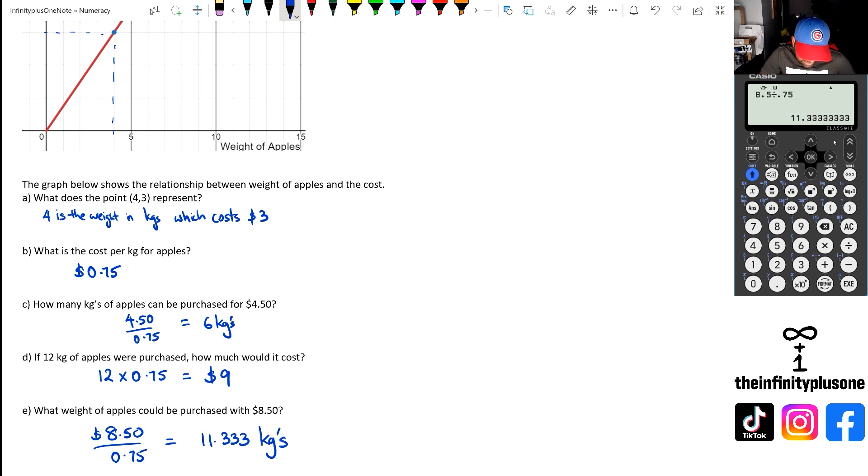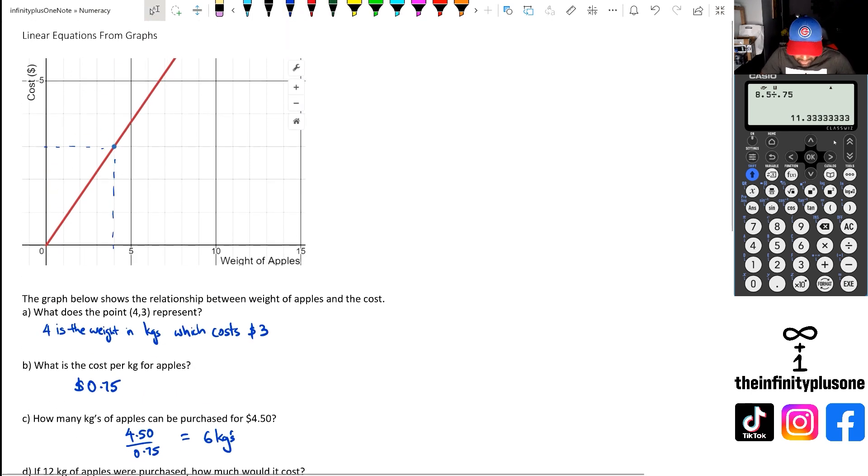Now, for this particular one, I think the graph was pretty straightforward because it was looking at the weight of apples. In my previous videos, we talked about when we join the dots to create a straight line.